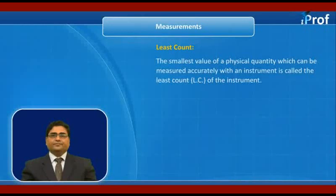The smallest value of a physical quantity which can be measured accurately with an instrument is called the least count (L.C.) of the instrument.